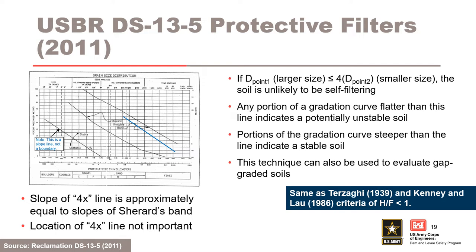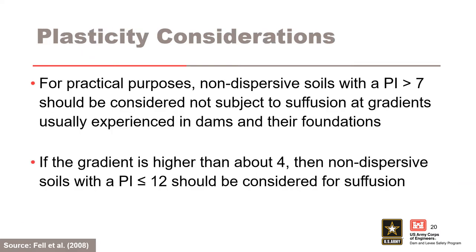The 4x line is the same as Terzaghi in 1939 and Kenny and Lau in 1986 criteria of H over F less than 1, which will be discussed later. For plasticity considerations, for practical purposes, non-dispersive soils with a PI greater than 7 should be considered not subject to suffusion at gradients usually experienced in dams and their foundations. If for some particular reason the gradient is higher than about 4, then non-dispersive soils with a PI less than or equal to 12 should be considered for suffusion. This was considered to be a somewhat conservative approach.